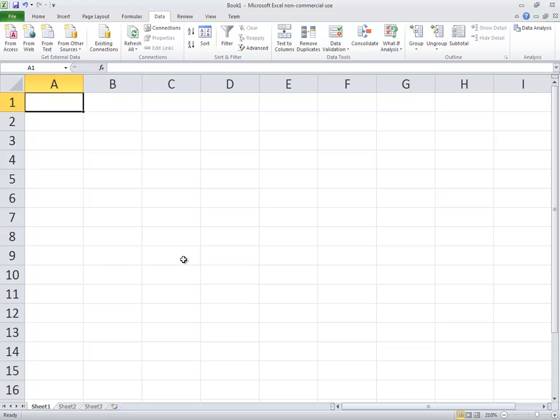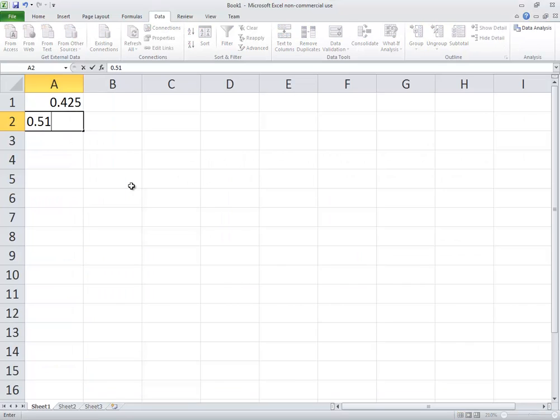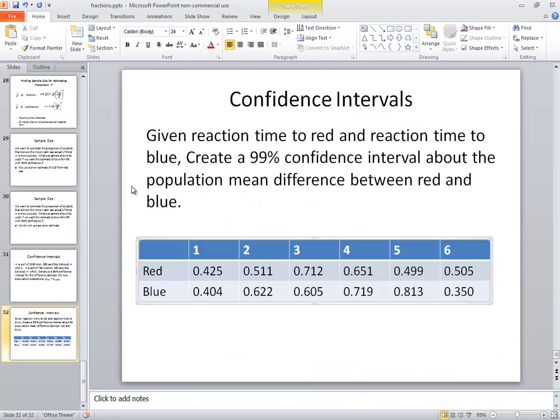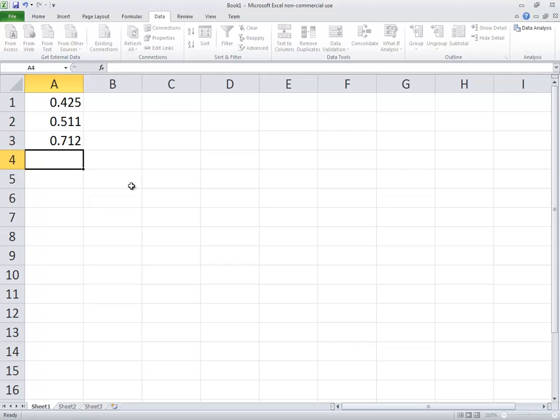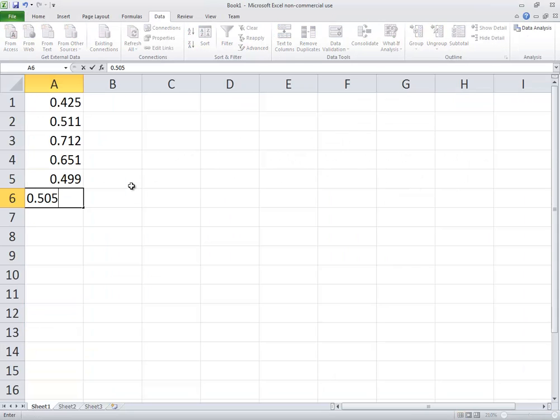So let's put our red in our first column. So I got 0.425, 0.511, 0.712, 0.651, 0.499, and 0.505.